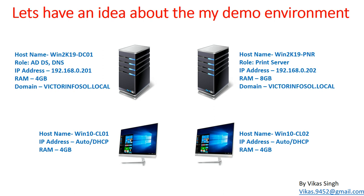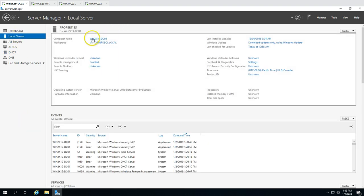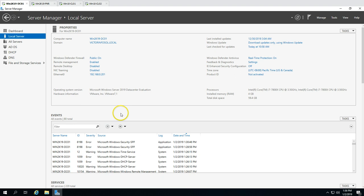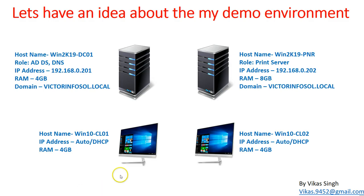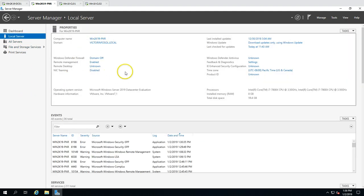The demo environment is the same as used in the last video. Our print server is already configured and good to go. The first machine is our Active Directory domain controller, win2k19-dc01, with the AD and DNS role running. Its IP address is 192.168.0.201. The second server is win2k19-pnr, our print server, with IP address 192.168.0.202, joined to the domain.